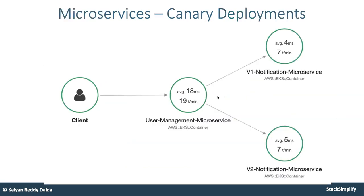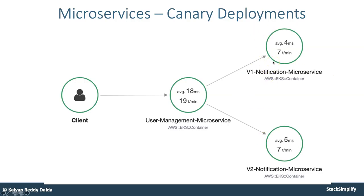Finally for microservices, we are also going to do canary deployments. When we call the user management microservice, there will be two versions of notification service live and the traffic will be distributed based on configuration — 50/50 or 75/25. Using Kubernetes out-of-the-box features with pod number changes, we are going to implement these canary deployments.